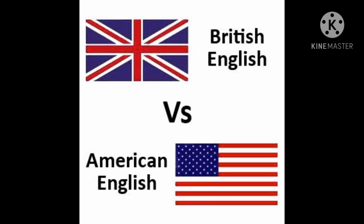Many British people settled in America and they taught English to the native Americans. The native Americans modified — not only modified, but also simplified that vocabulary, spelling, and even pronunciation. For example, British people say 'biscuit' but American English says 'cookie.' For spelling, British English spells colour C-O-L-O-U-R, but American English omits the U: C-O-L-O-R. British English pronounces 'schedule' differently, while Americans say 'schedule.' So these are the differences in vocabulary, spelling, and pronunciation.